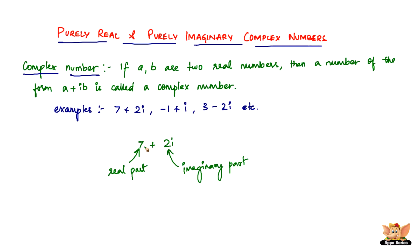So now, if the real part is 0, then we have 0 plus 2i. Then this complex number is a purely imaginary complex number because the real part is missing. There's only the imaginary part there, right? So it's a purely imaginary part.